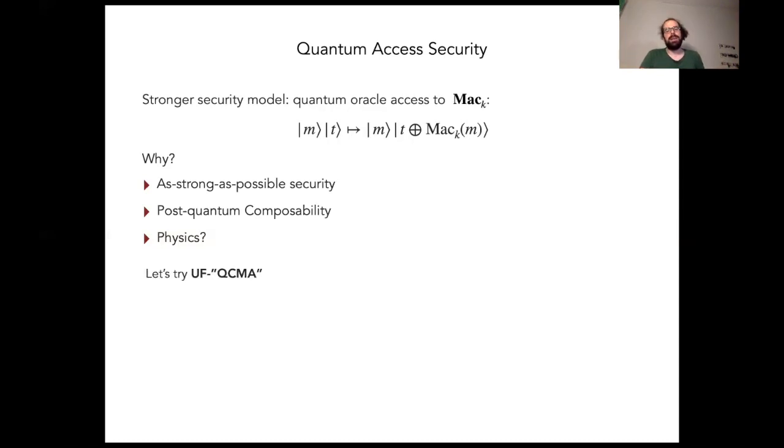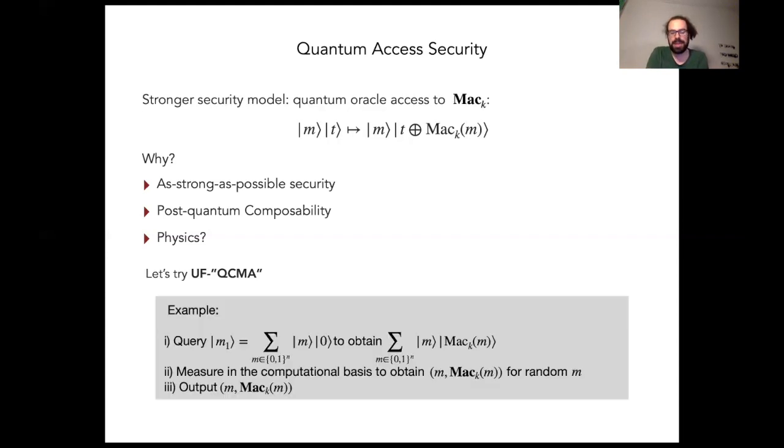First of all, let's try the naive generalization of UFCMA. Let's call that unforgeability under quantum chosen message attack. Here's an example attacker. This attacker just prepares a uniform superposition of messages, uses the oracle to convert it into a uniform superposition of message tag pairs, and afterwards applies a measurement to obtain a random message tag pair and outputs that.